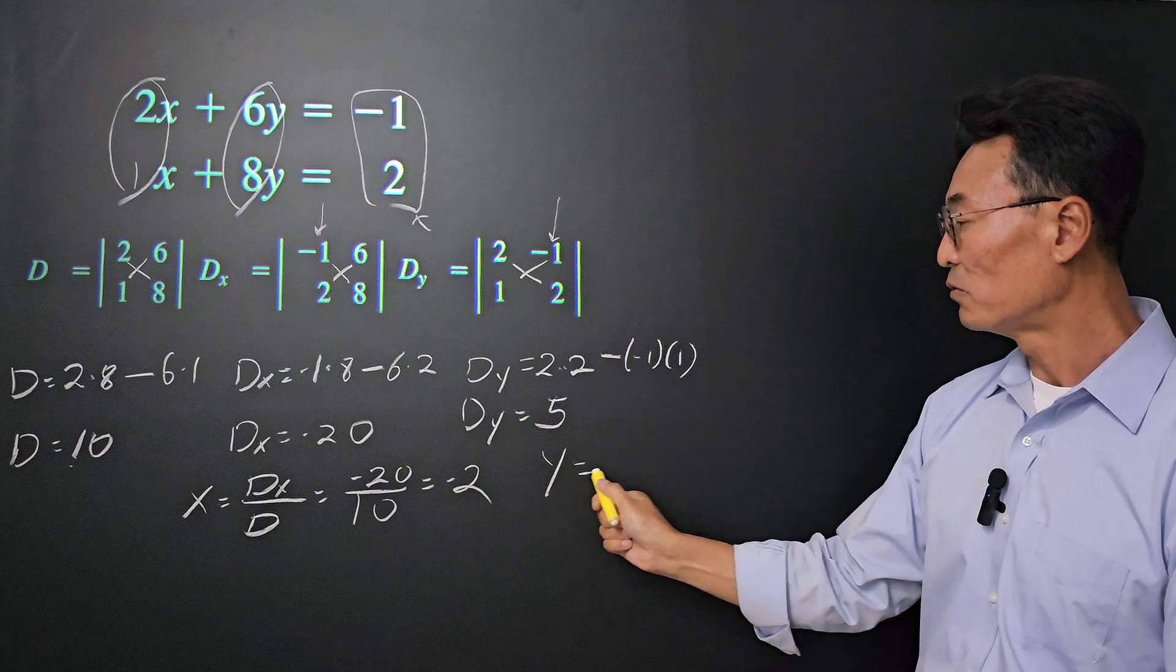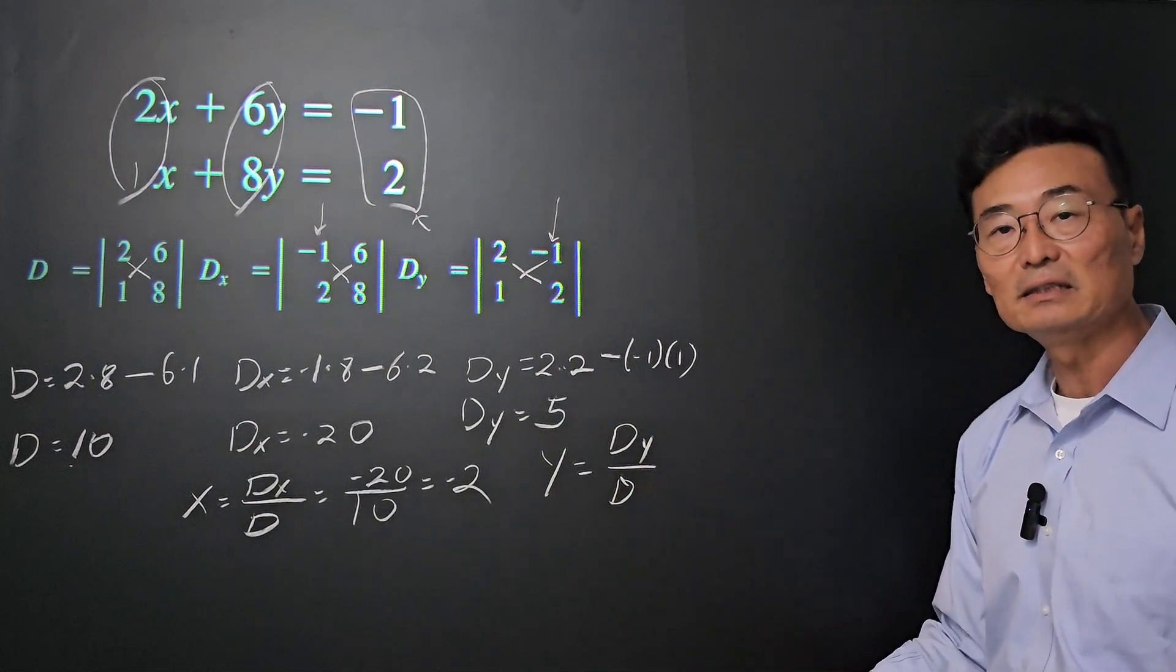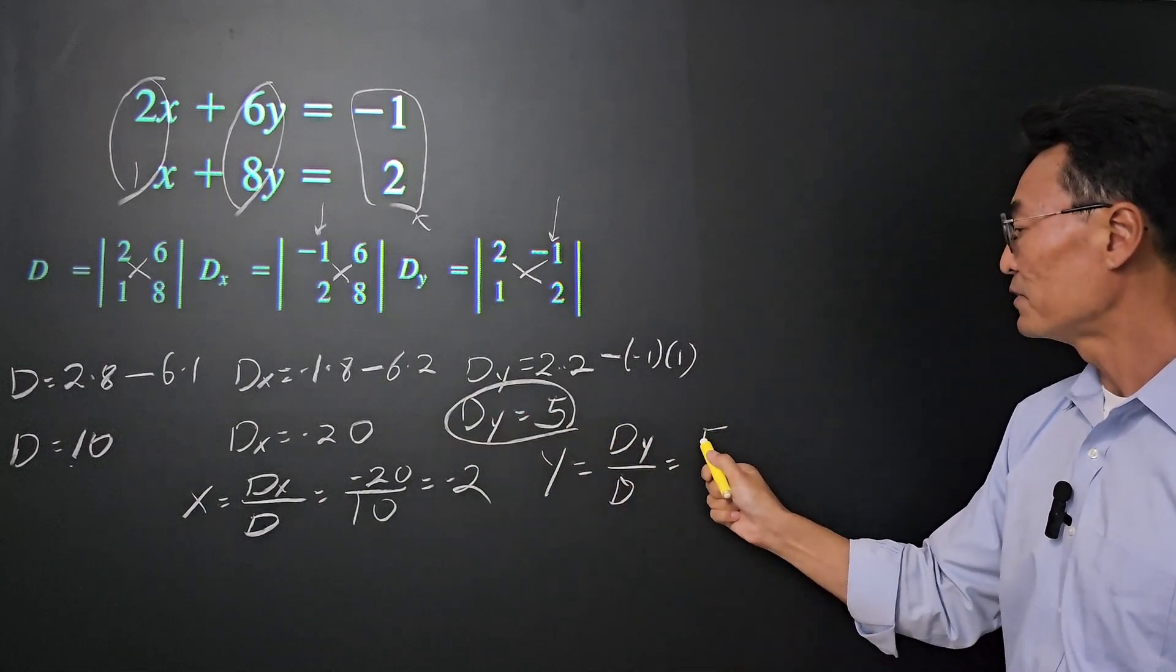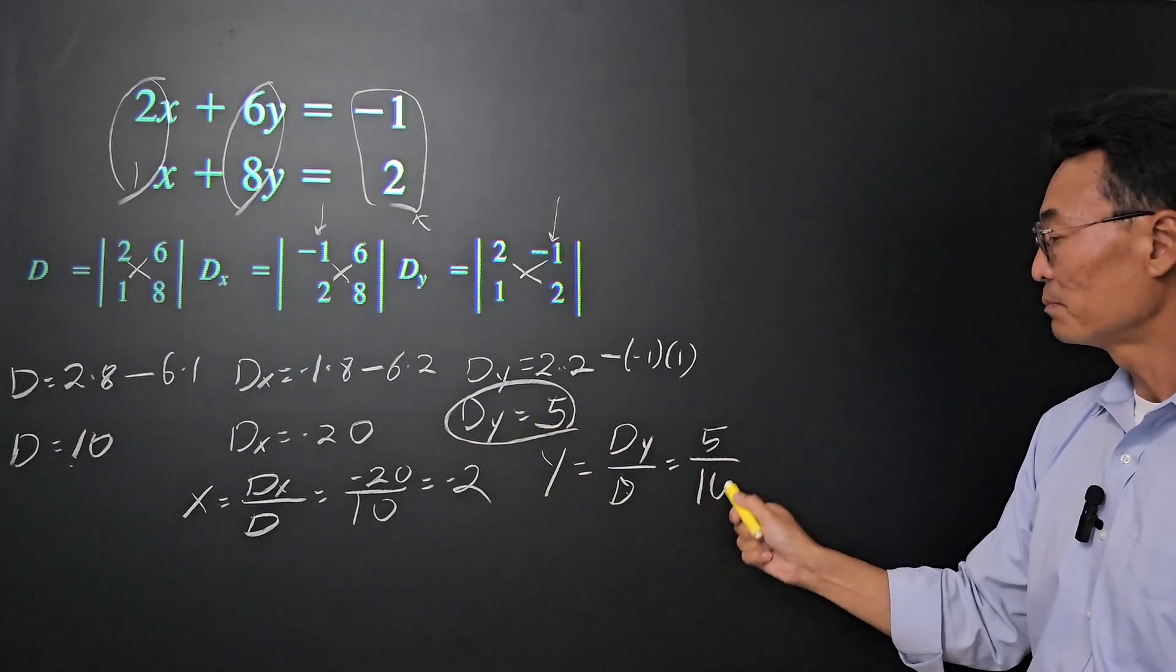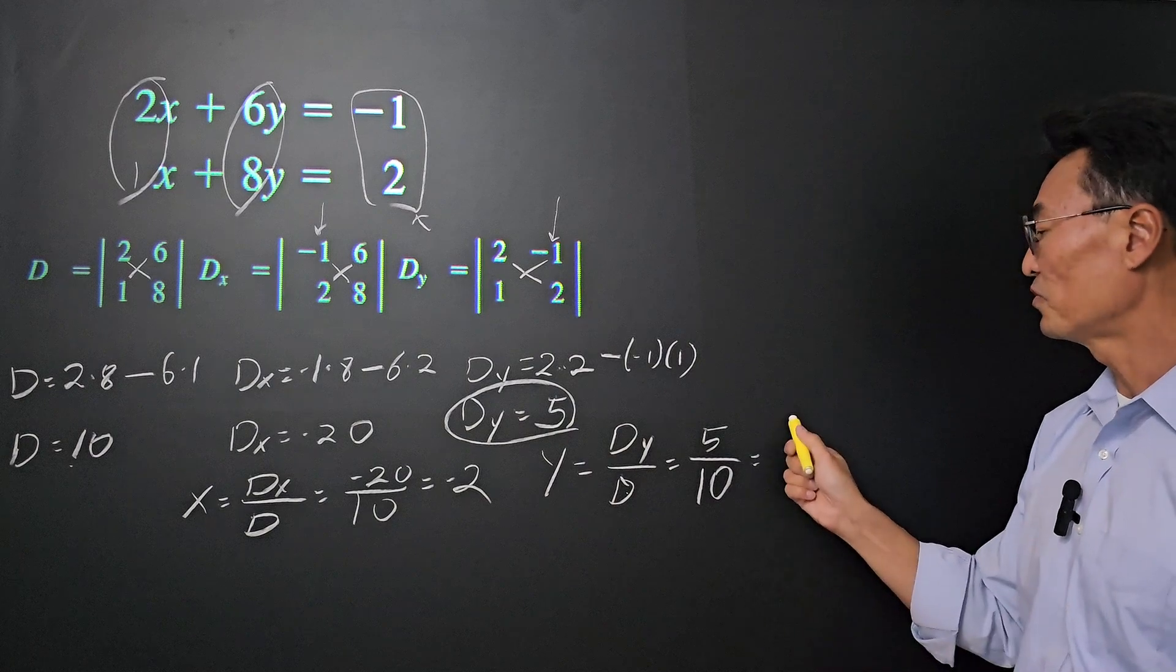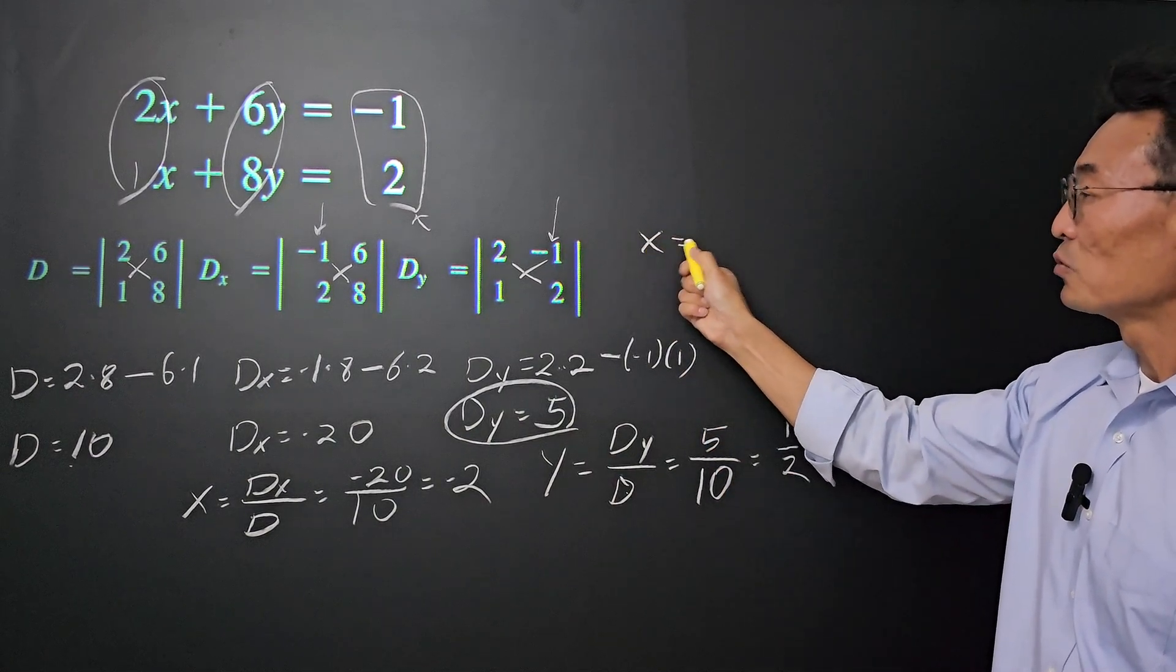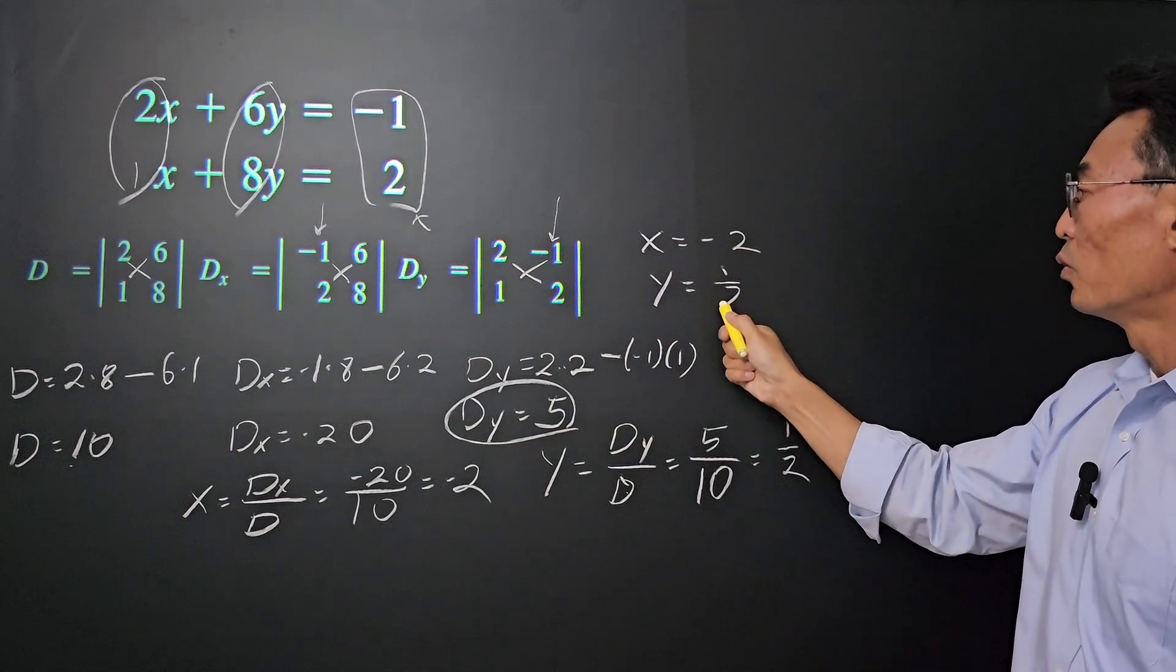To find y, we do Dy over D. Dy is 5, and D is 10. So 5 over 10 reduces to 1 half. This means x equals negative 2 and y equals 1 half.